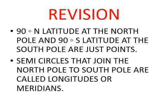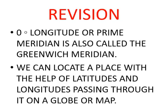Semicircles that join the North Pole to the South Pole are called longitudes or meridians. These longitudes are semicircular in shape. Latitudes are circles running east to west, while longitudes run north to south. The next point is: zero degree longitude or Prime Meridian is also called the Greenwich Meridian.